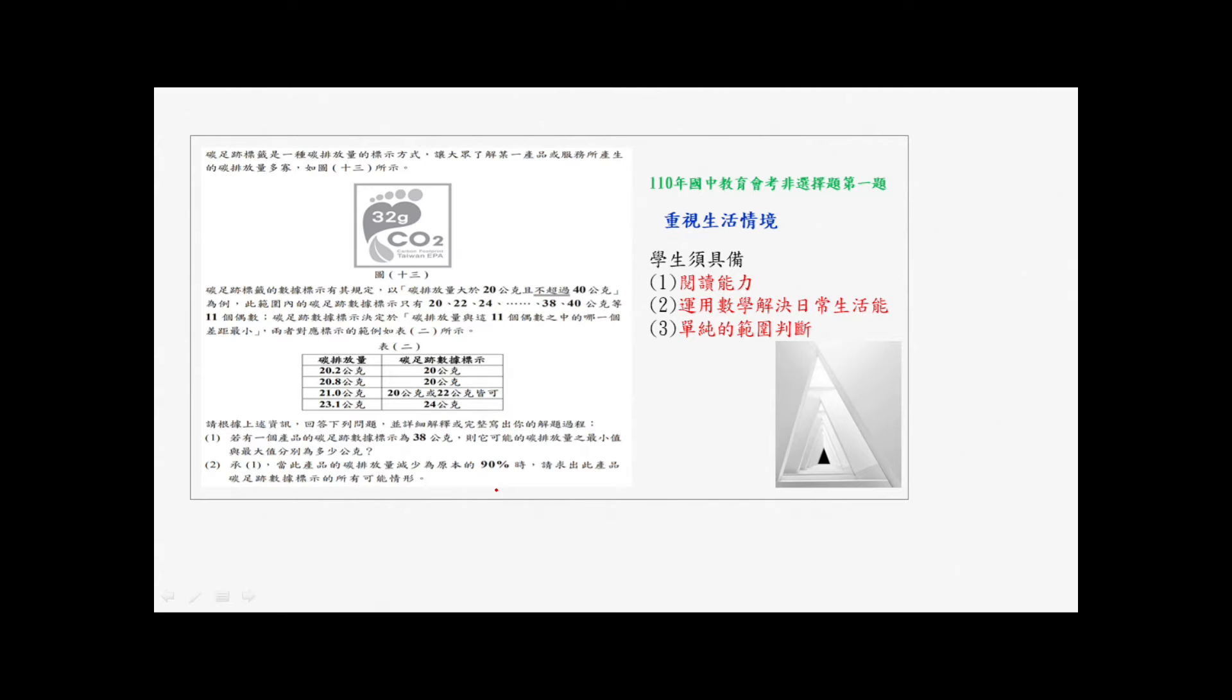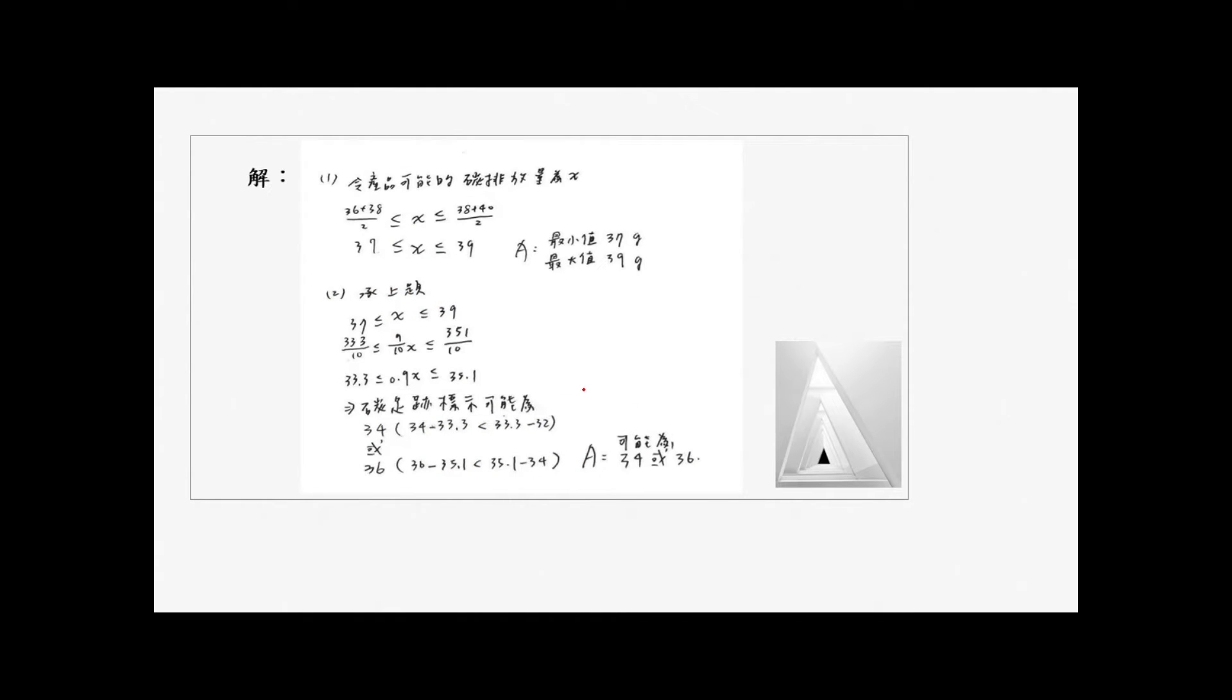第二小题:承第一小题,当此产品的碳排放量减少为原本的90%时,请求出此产品碳足迹数据标示的所有可能情形。这题主要考学生应具备的能力:第一个是阅读能力,第二个运用数学解决日常生活能力,第三个单纯的范围判断。